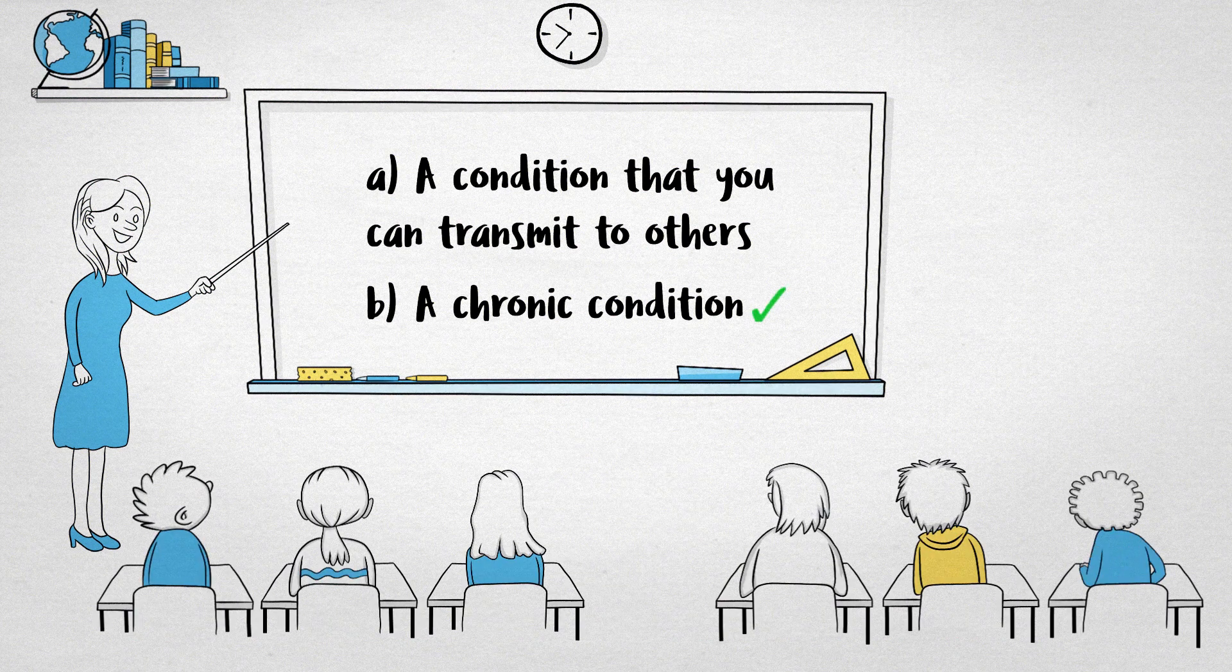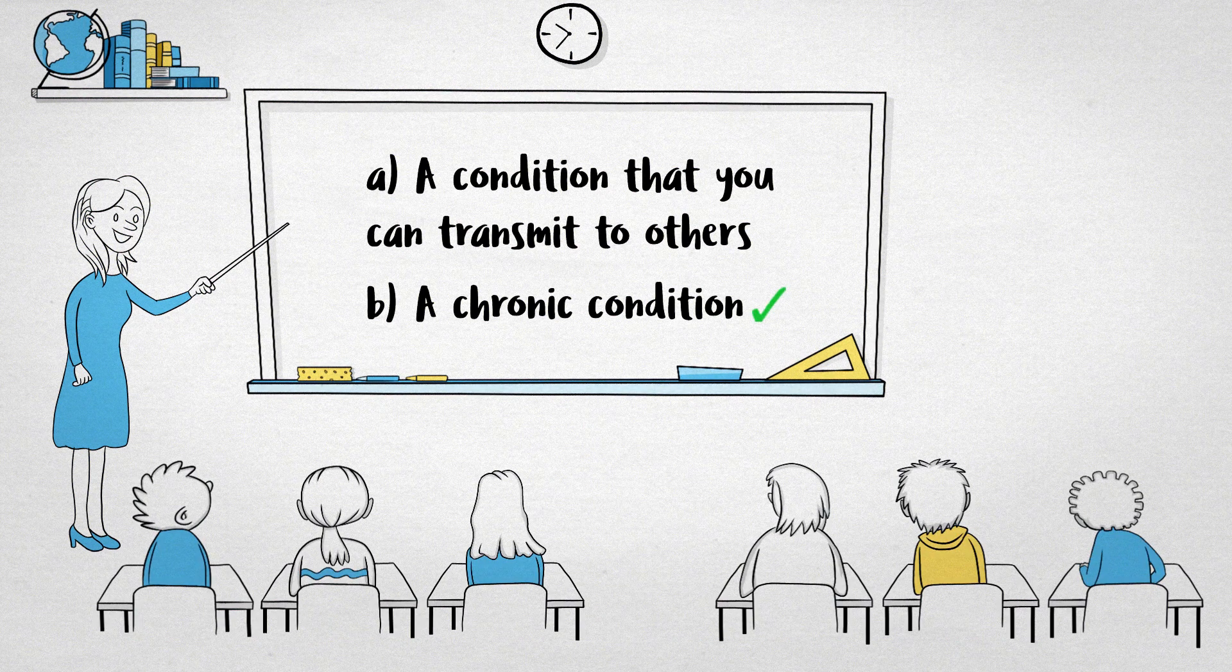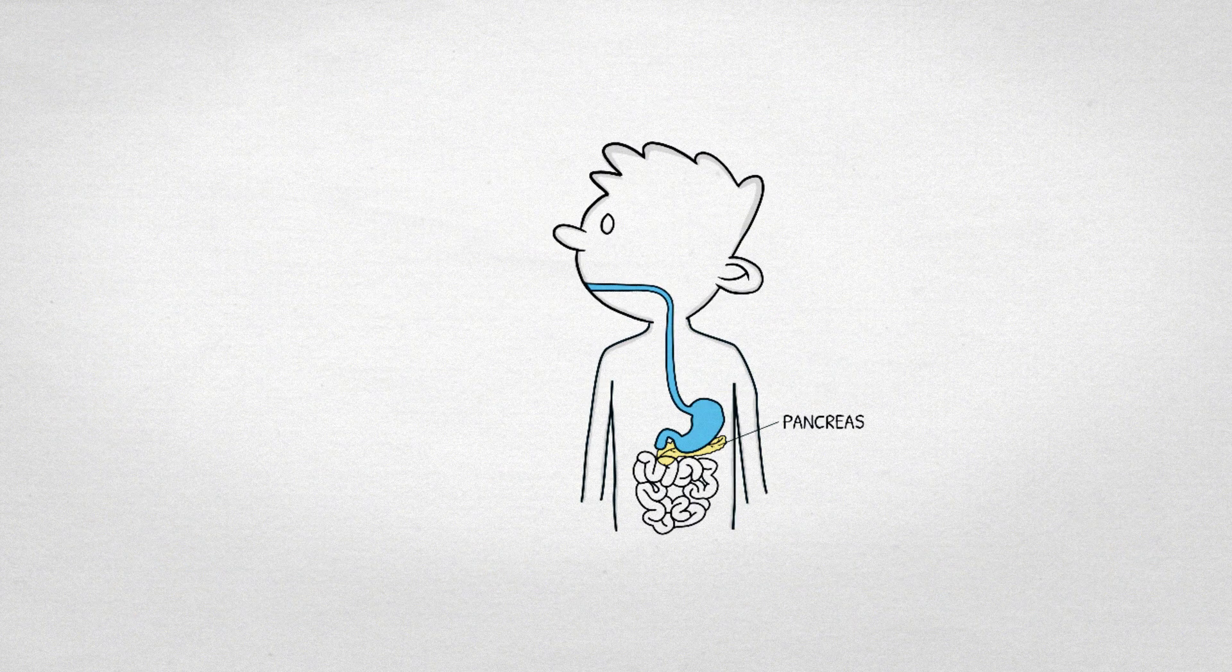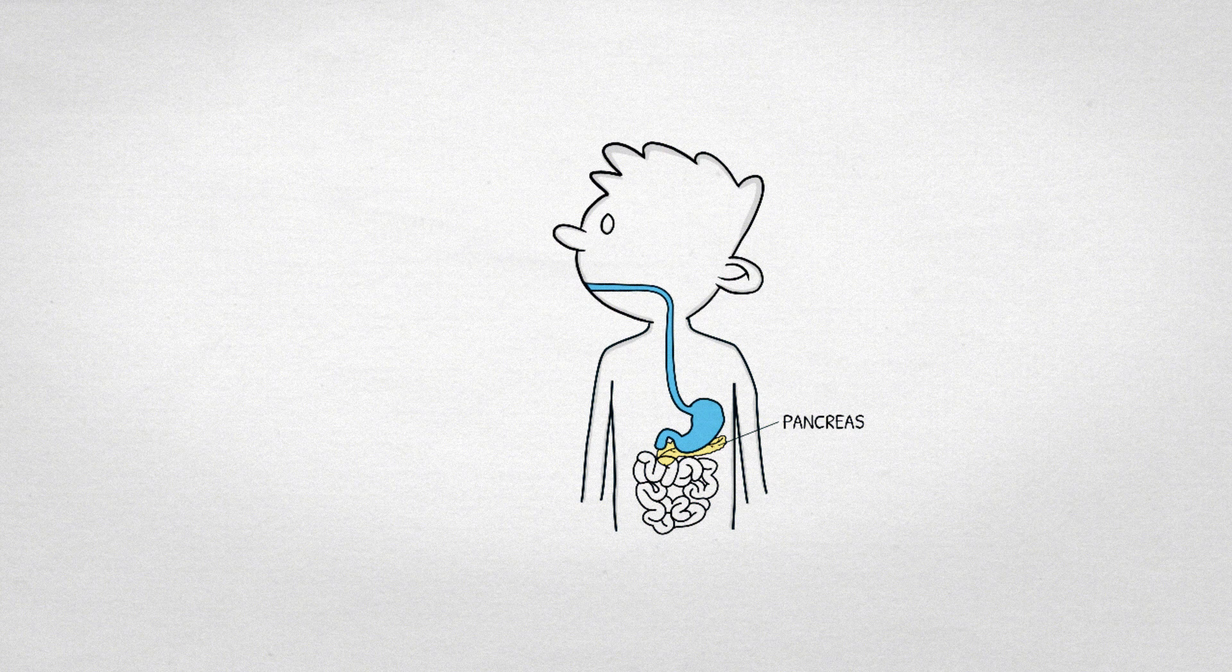Diabetes is a chronic condition. This means that it can't be transmitted from person to person. Diabetes is marked mainly by having too much sugar in the blood. The pancreas of a person with diabetes stops making insulin or can't make good use of it.